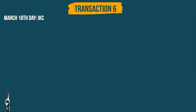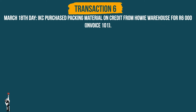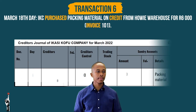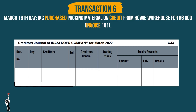IKC purchased packing material on credit from Howie Warehouse for 6,000 Rand. The document number is 101. The day is the 18th of March. The creditor is Howie Warehouse. We will record the transaction in the creditors control column and in the sundry accounts, as packing material does not have its own column.